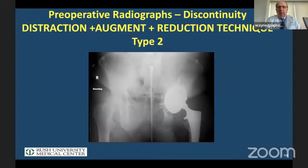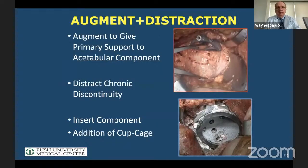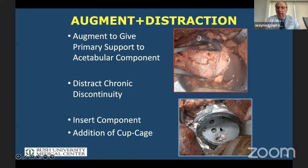A type two discontinuity: this cup was put in elsewhere — an 80 millimeter cup — still not big enough, and there's a discontinuity. So this is a reduction technique plus distraction plus augments. We put an augment medially, fix it, distract it, and then insert a component — plus or minus a cage if you'd like. Notice that before the augment the diameter was 74; with the augment it's now 64.